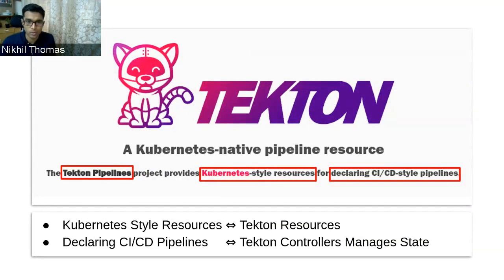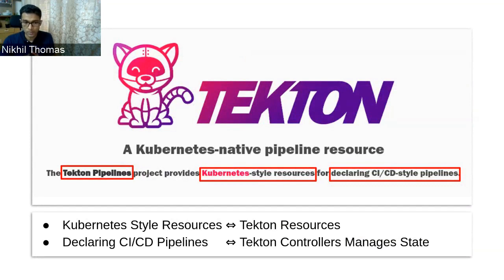Hi, in this demo I will show you how to build a Kubernetes-native CI/CD pipeline using the Tekton Pipelines project. Tekton Pipelines is a set of Kubernetes-style resources for building CI/CD pipelines. It provides you with CRDs for defining your CI/CD pipelines and has a controller which manages the state of your CI/CD pipeline.